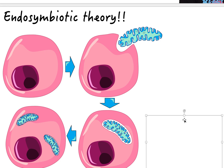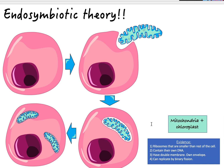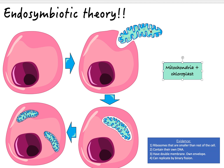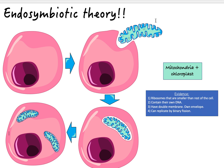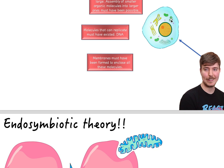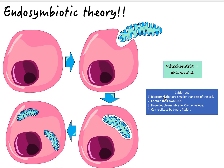But a theory needs evidence. What was engulfed could have been a mitochondrion or a chloroplast — once free-living by itself, now a part of our eukaryotic cells. The first piece of evidence is that mitochondria and chloroplasts have ribosomes that are different from the rest of the cell — their own separate ribosomes — which suggests that these organelles were once free-living prokaryotes.